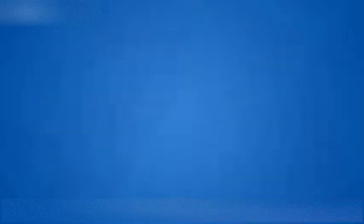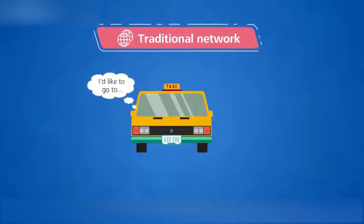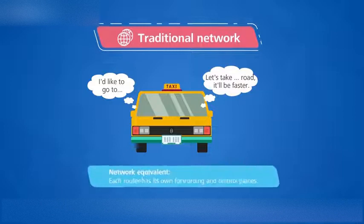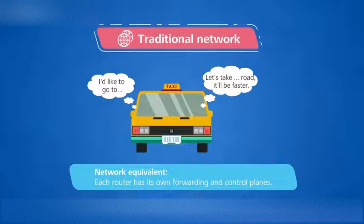To clarify the relationship between SDN and NFV, let's use hailing a cab as an analogy. Traditional networks are like standing on the sidewalk waiting for a cab to come by. After a cab arrives, you get in, tell the driver your destination, and he comes up with a route to get there. The driver makes these decisions on his own, like a router with its own control and forwarding planes.